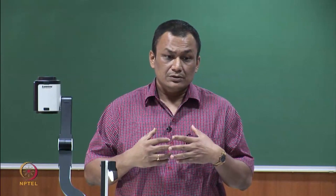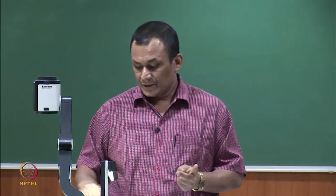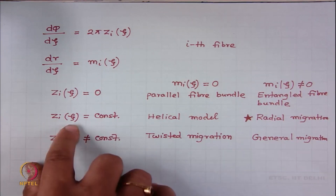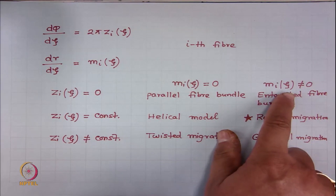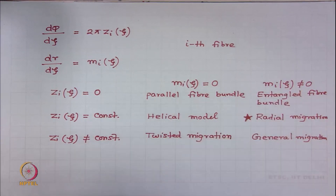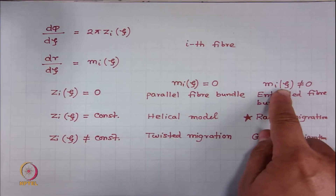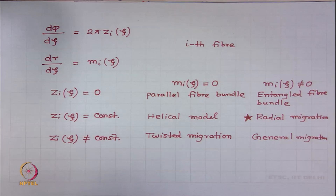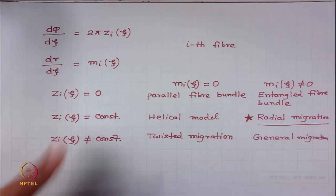In order for fibres to move radially, two conditions are very important. First, the twist z_i of the i-th fibre is constant and is a function of zeta. Second, radial movement must be present — m_i ≠ 0, meaning tan alpha = dr/dzeta ≠ 0. If these two situations happen, then there is a possibility of radial migration of fibres. This is basically the theme of this module.